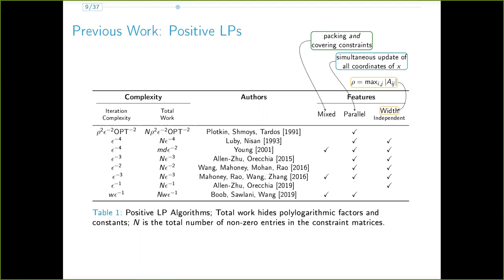One of the first parallel algorithms for pure packing and covering LPs was by Trotkin, Shmois and Tardosh in 1991, followed by the first width-independent algorithm by Lubin and Nisan in 1993. In 2001, Young gave the first parallel and width-independent algorithm for mixed packing and covering LPs. Most of these early works were quite combinatorial in nature.